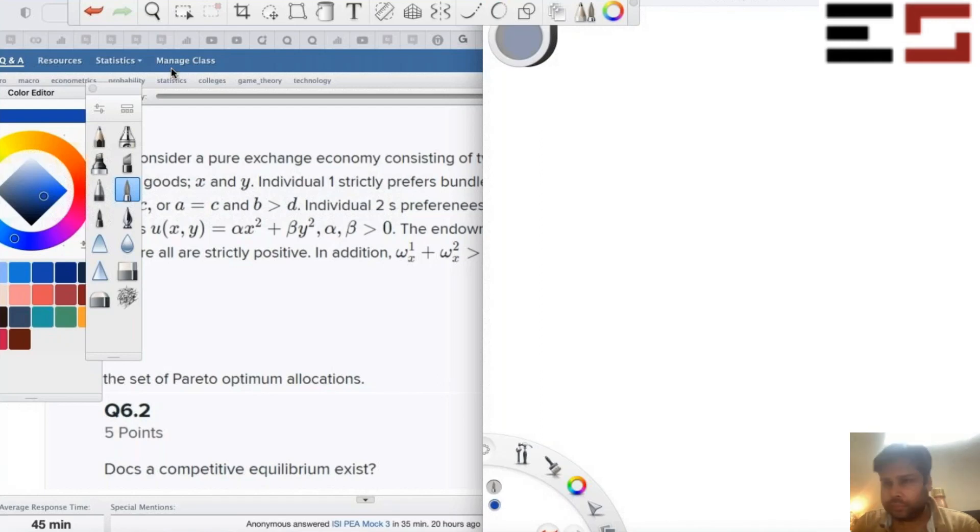Sir, if the two individuals are having lexicographic preferences, then what could be the Pareto-efficient allocations?